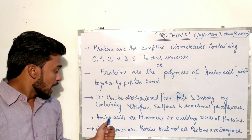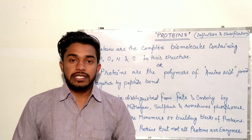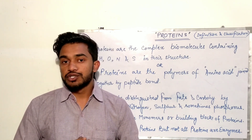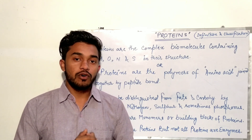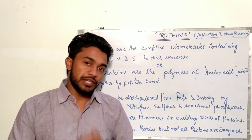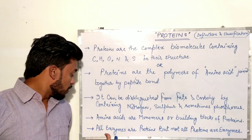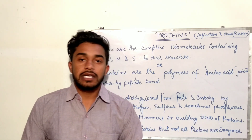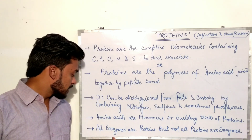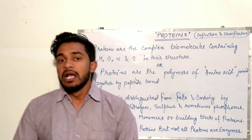Amino acids are the monomers or building blocks of proteins. These amino acids are joined together by peptide bonds to form a polypeptide chain, and a very long polypeptide chain is considered a protein. One important line to remember: all enzymes are proteins, but not all proteins are enzymes.